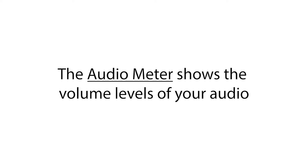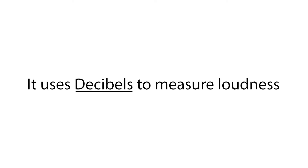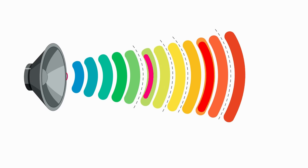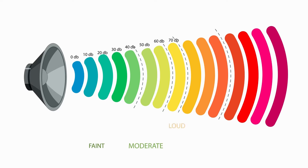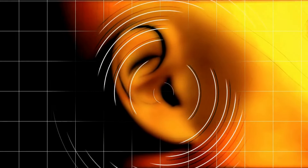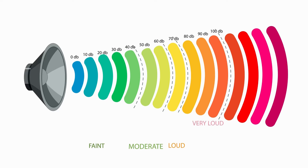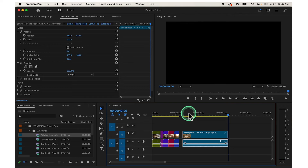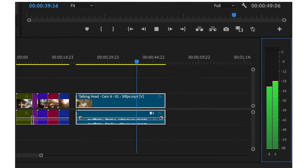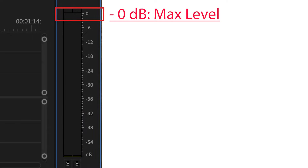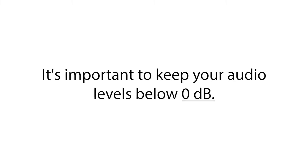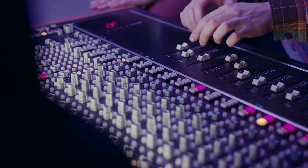The audio meter shows the volume levels of your audio, using decibels to measure loudness. Using the audio meter when editing is important because it's hard to tell how loud or quiet the sound is just by listening. The audio meter helps you be precise and make sure your video sounds good for viewers. In Premiere Pro, you'll find the audio meter on the right side of the screen — it looks like a vertical bar that moves up and down as your audio plays.